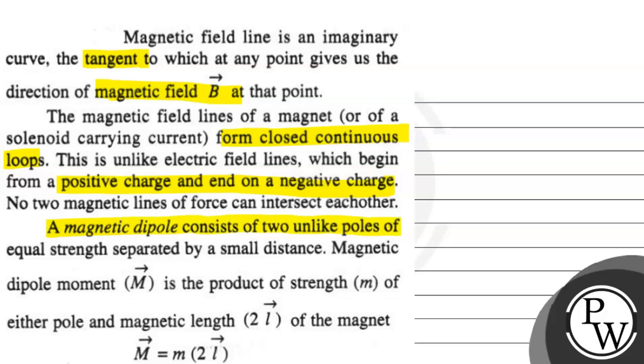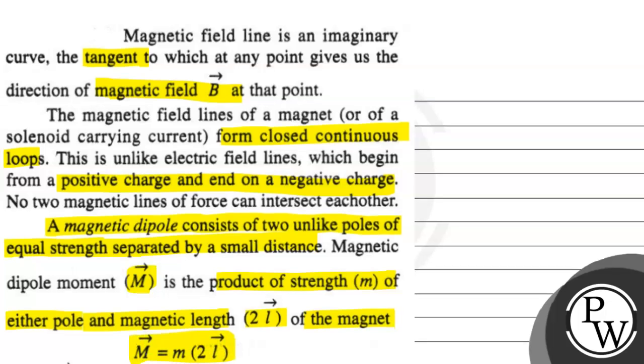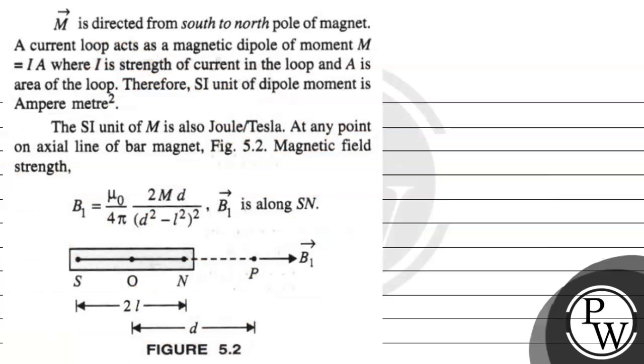A magnetic dipole consists of two unlike poles of equal strength, separated by a small distance. Magnetic dipole moment m vector is the product of the strength of either pole and the magnetic length 2l of the magnet. So this is the formula for the magnetic dipole, which is the product of the pole strength of any pole times the total length. Further, they are saying m vector is directed from south to north pole of a magnet.